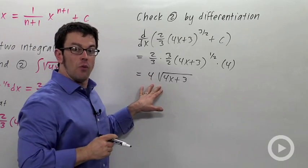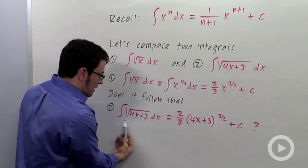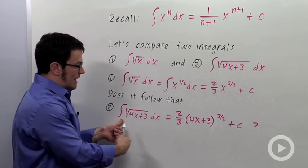Now, let's take a look at what we started with. The integral of root 4x plus 3. We didn't have a 4 in front. So this method has not worked.